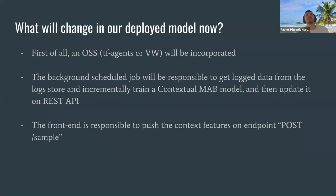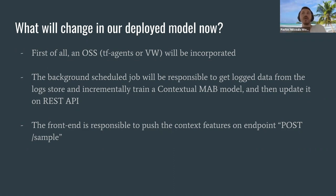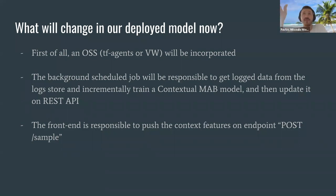What changes in your deployed model when moving to contextual bandits? You use an open source library — TF Agents or Vowpal Wabbit. The background scheduled job now incrementally trains the contextual bandit and updates the serialized model on the REST API, instead of just sending alpha and beta parameters. And during the sampling phase, the front end is responsible for pushing the context features to the endpoint.